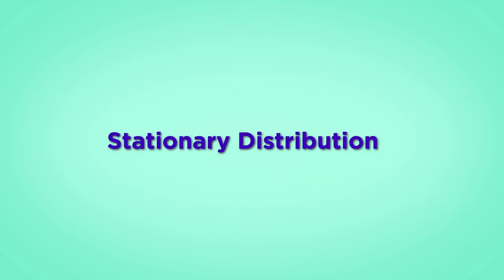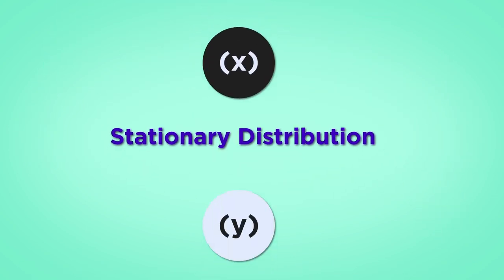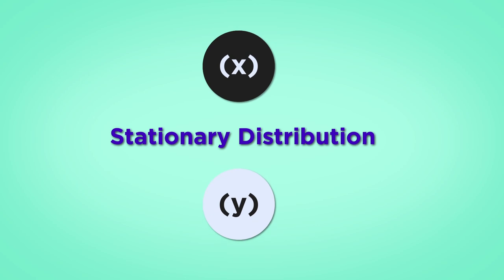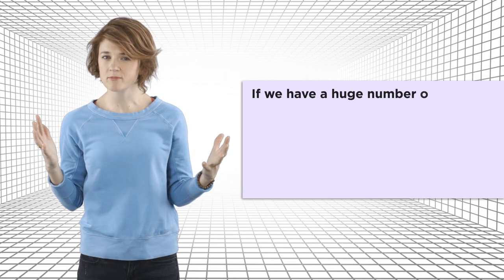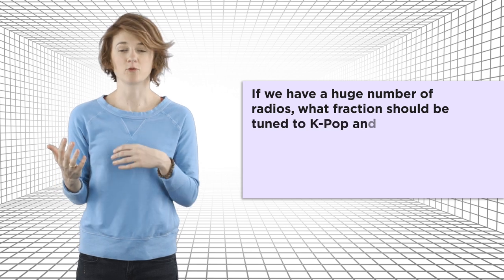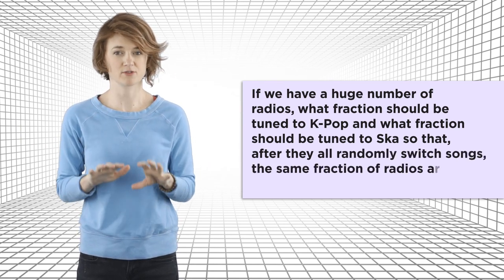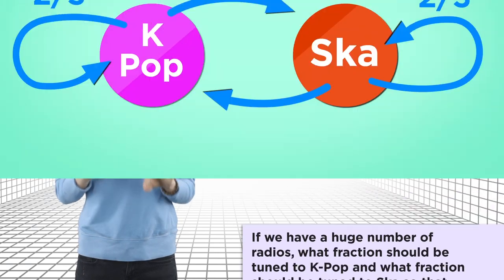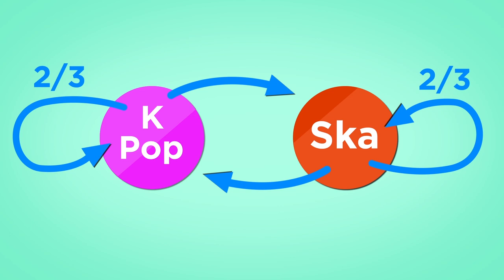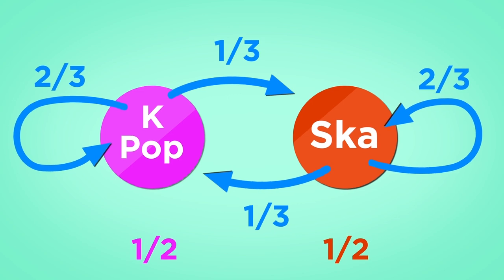Now I want to introduce the stationary distribution. The stationary distribution assigns one number to each state. The specific numbers it assigns are determined by the answer to this question. If we have a huge number of radios, what fraction should be tuned to K-pop and what fraction should be tuned to ska, so that after they all randomly switch songs, the same fraction of radios are tuned to each channel. In this case, with the probability transition function indicated, the stationary distribution of the Markov chain has value one half on K-pop and value one half on ska. If we have a thousand radios and about half the radios are tuned to K-pop and half to ska, at the next song change, a third playing K-pop will switch to ska, but the same number playing ska will switch to K-pop, so it stays balanced. That's what makes it a stationary distribution.